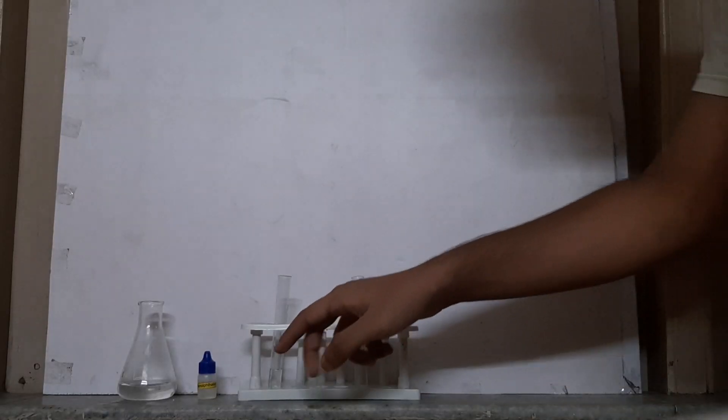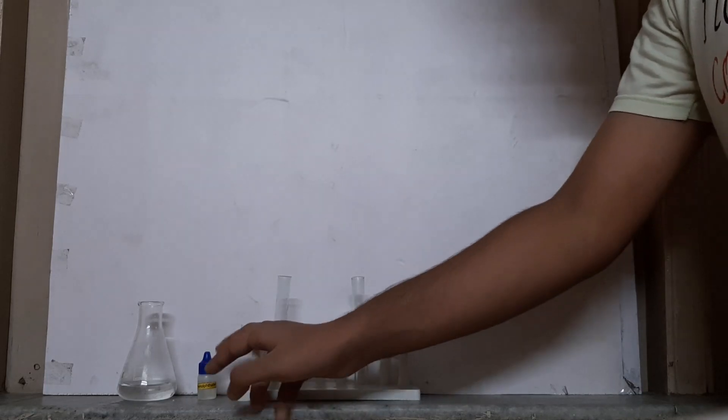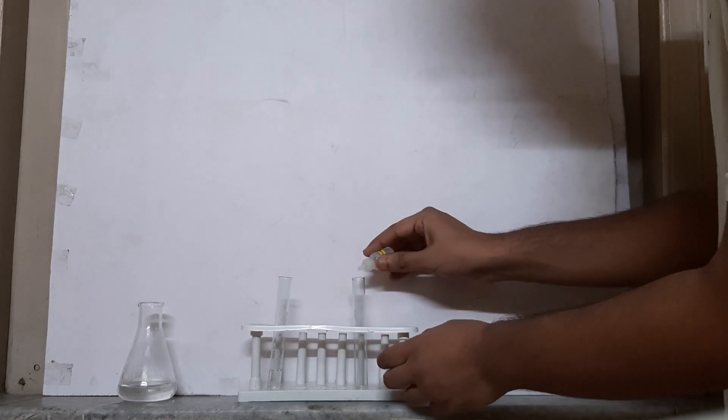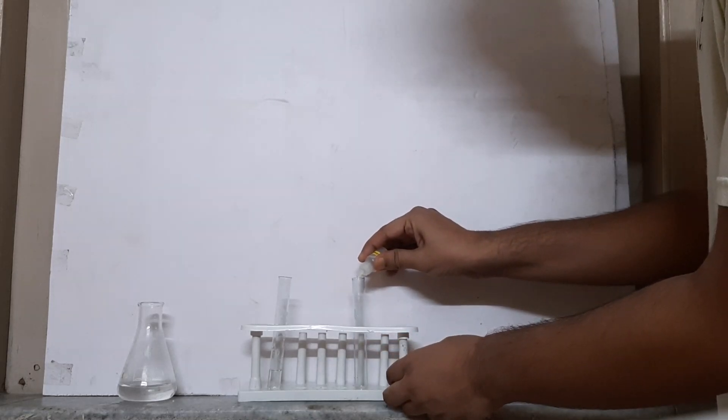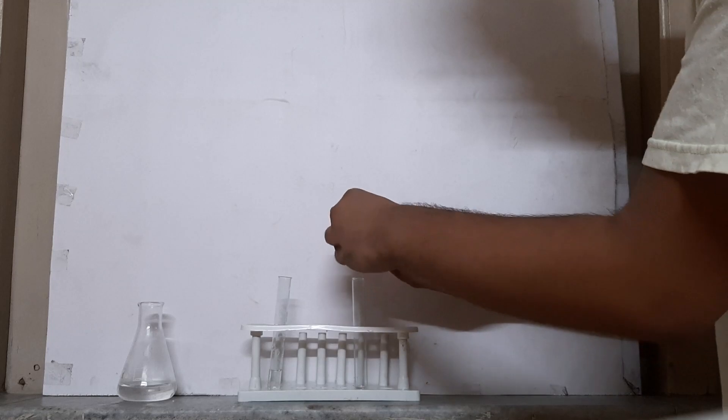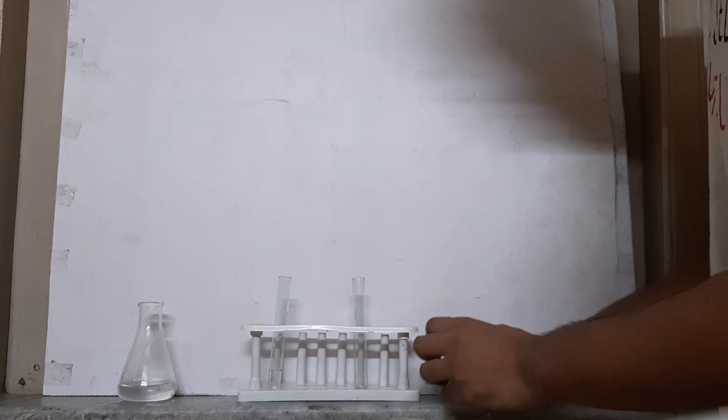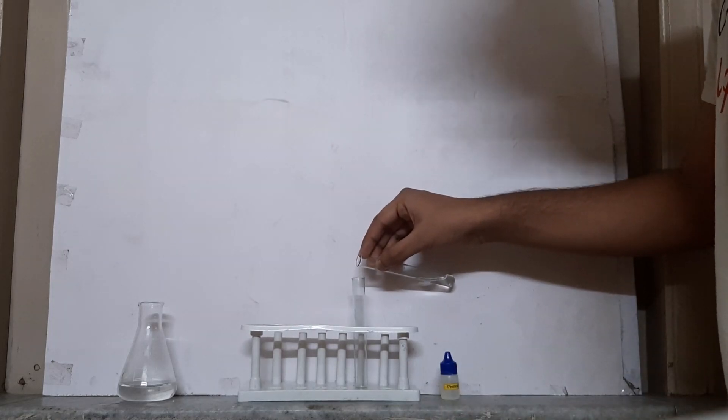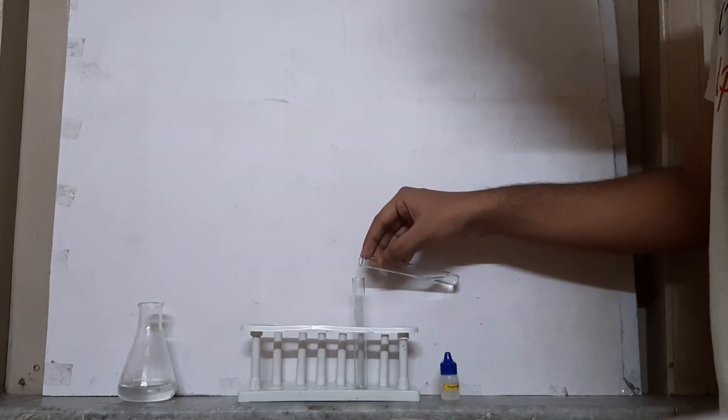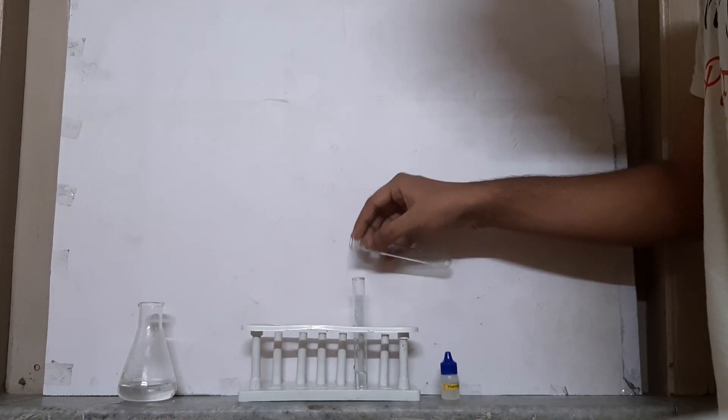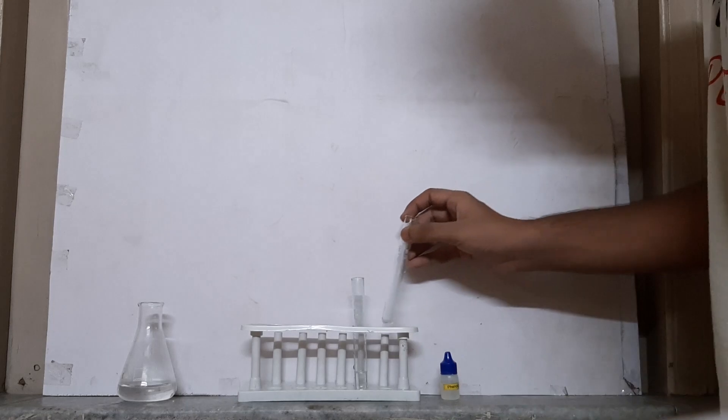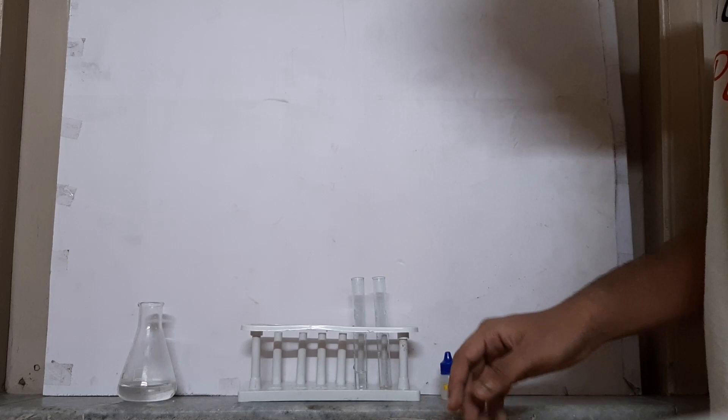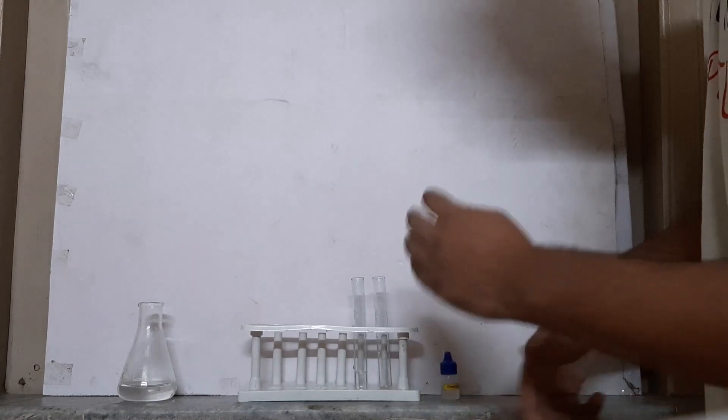First I'm going to add some phenolphthalein solution in the spare test tube, and then I'll be adding the HCl solution. We'll see if the color turns something or it just remains colorless. The solution is very clear, it is colorless.